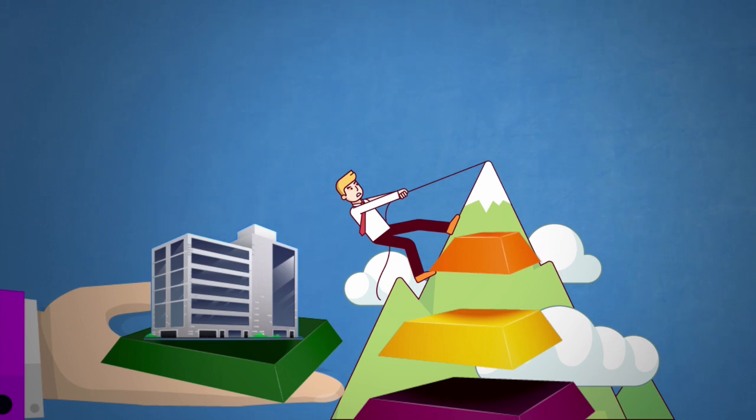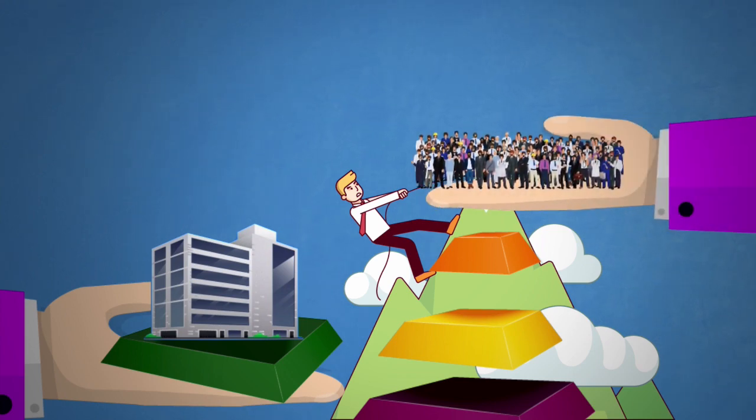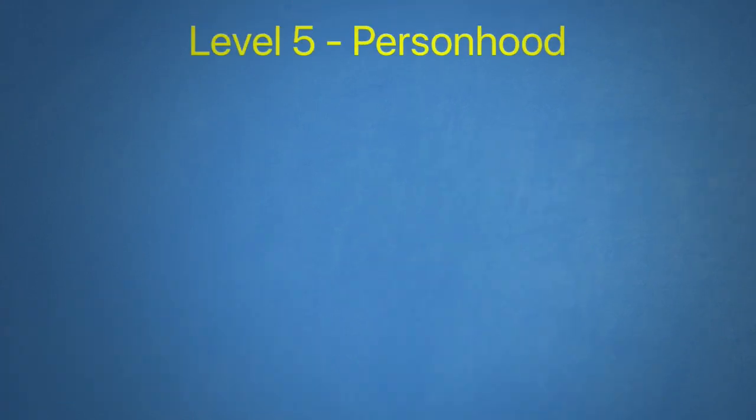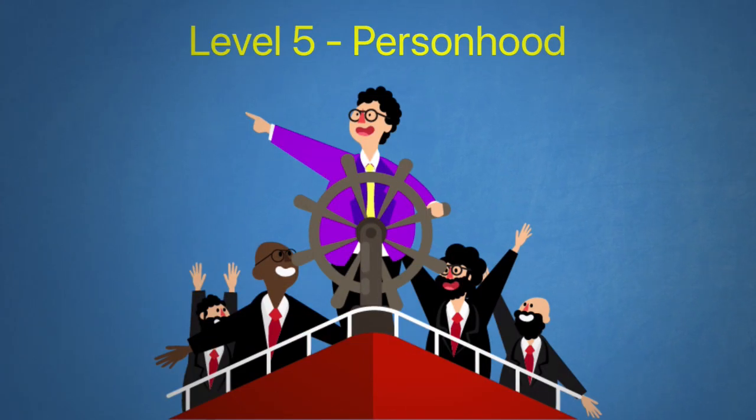And if you do the 3 correctly, that is relate with people, produce results, and if you develop others, level 5 will be given to you by the people. And level 5 is called personhood, which can be summarized by the word respect.